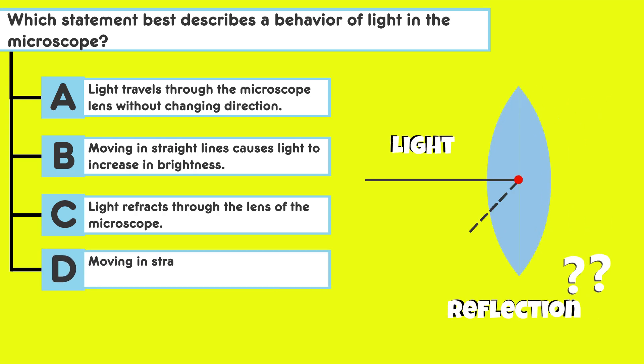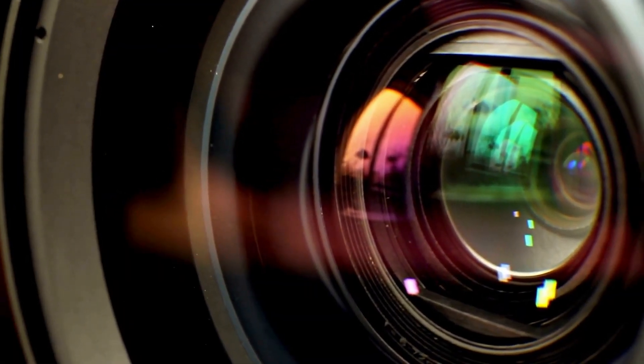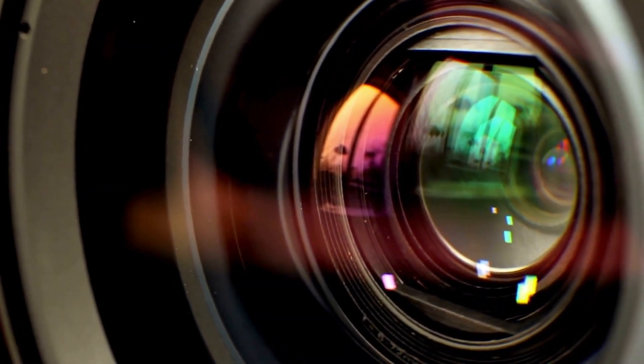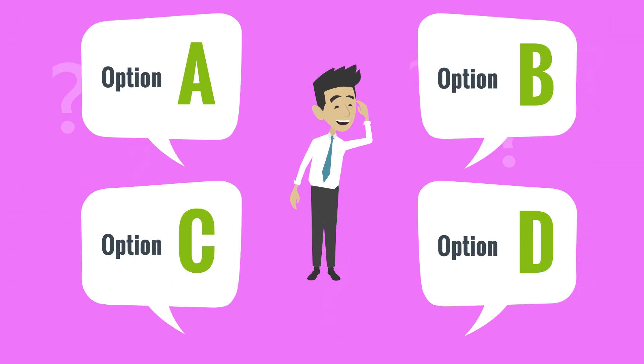Answer choice D: Moving in straight lines keeps light from reflecting. So let's consider how light behaves in terms of reflection. Does moving in straight lines prevent reflection? Choose your answers and proceed to part B.